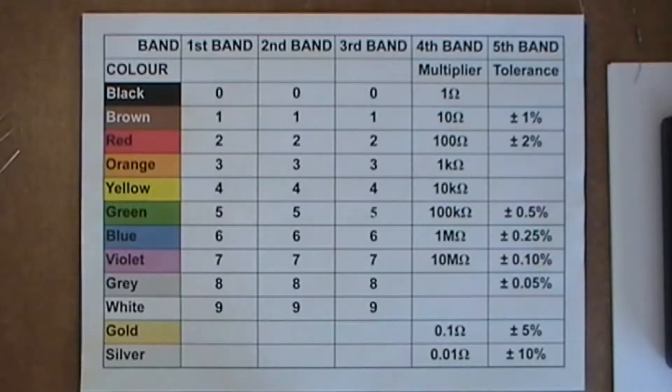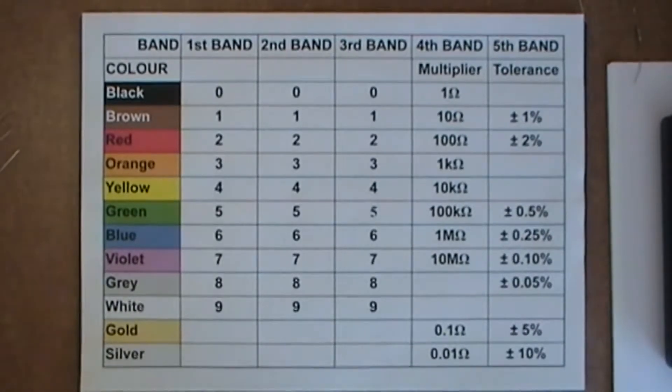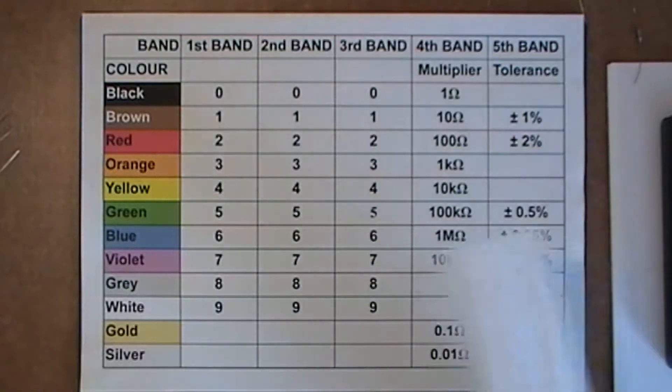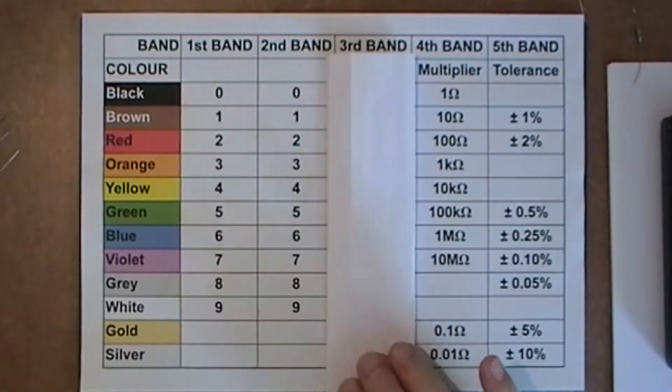So let's have a look at this chart. Here's my colour code chart for resistors and there are two resistors that I'm going to be looking at. The difference being is that one has four bands on it and the other has five bands on it. Now the four band resistor, that particular band will disappear. It's more like two halves. I've got the first half where I've got the colours and the values and then on the other side I've got the multiplier and the tolerance.